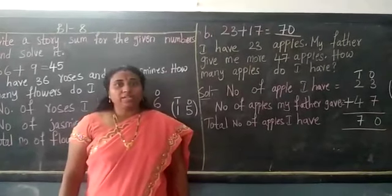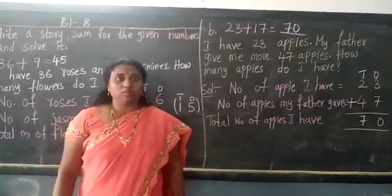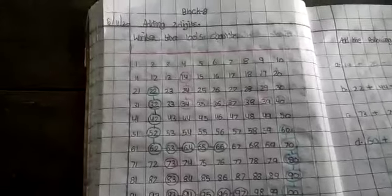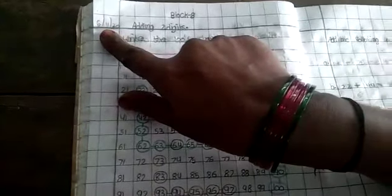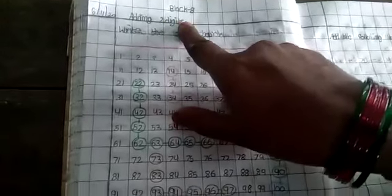Today we will write our classwork block 8 children. Good morning children. Take out your classwork, draw the margin, write today's date, write block 8, adding 2 digits.